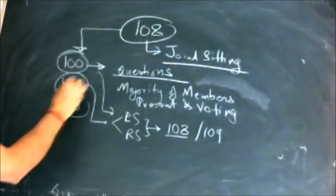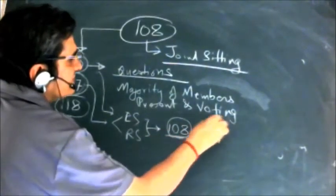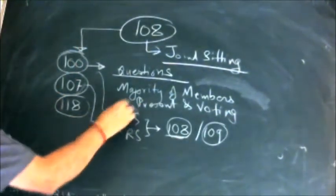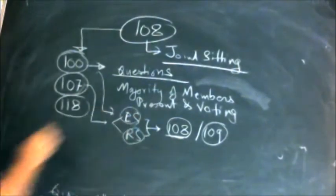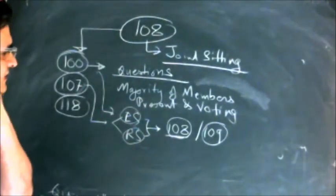Article 107 very explicitly states that other than the provisions covered by 108 and 109, the matters have to be passed by both the houses of the parliament. Only then it shall be taken that it is passed.